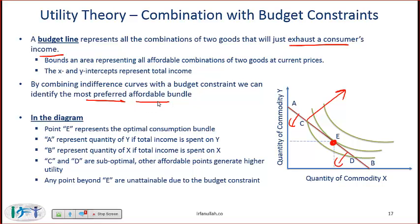Of all the affordable bundles, E is the one the consumer would be happiest with. Point A represents the quantity of Y a consumer can get if he spends all his money on Y. Point B represents the quantity of X if he spends all his budget on X. Points C and D are possible bundles, but the consumer is on the lowest indifference curve and could be happier by moving to E. So C and D are possible but not optimal.